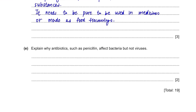Part E. Explain why antibiotics such as penicillin affect bacteria but not viruses. Penicillin targets specific parts of the bacteria — it binds and stops metabolic reactions or stops cell wall growth. However, viruses have neither metabolism, a specific target, nor a cell wall, making it impossible to be affected by penicillin. Antibiotics may also stop enzymes within the bacteria from working, but viruses have no enzymes.